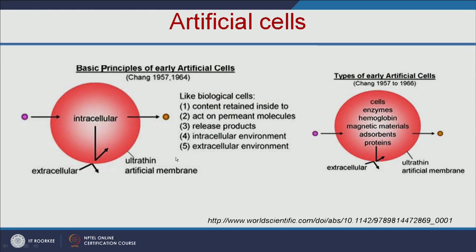Let us see the basic principles of early artificial cells. These artificial cells are made up of an ultra-thin artificial membrane, having both intracellular and extracellular environments. The content you want to encapsulate will be inside the artificial membrane, and this membrane is permeable — it will permeate the substrate and can also release the product. We can encapsulate cells, enzymes, hemoglobin, and various other materials.